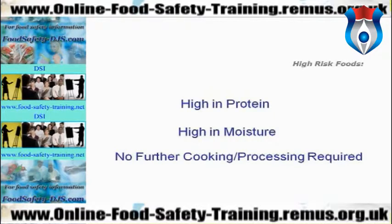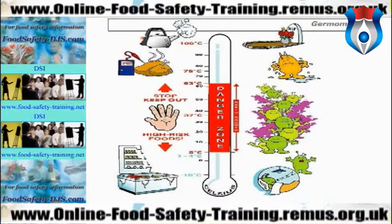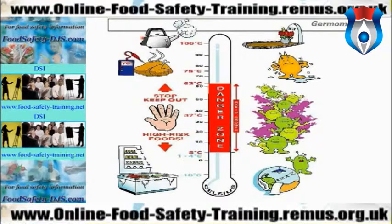High-risk foods are also high in moisture, and no further cooking or processing is required — in other words they are ready-to-eat food. The following temperatures are very important. This thermometer shows what happens to bacteria at certain temperatures. Starting at the bottom, minus 18 degrees Celsius is the maximum temperature of freezers, whether commercial or domestic.